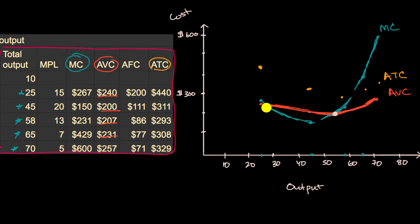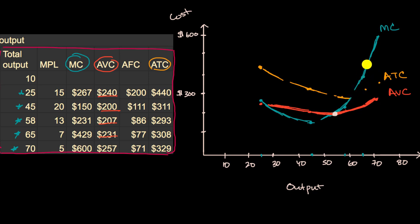Just as before, while marginal cost is less than average total cost, each incremental unit brings the average total cost down — until the point they cross. After that intersection, every incremental unit costs more than the average, bringing it up. So the intersection of the marginal cost curve and the average total cost curve represents the minimum — the bottom of the U — of the average total cost curve.